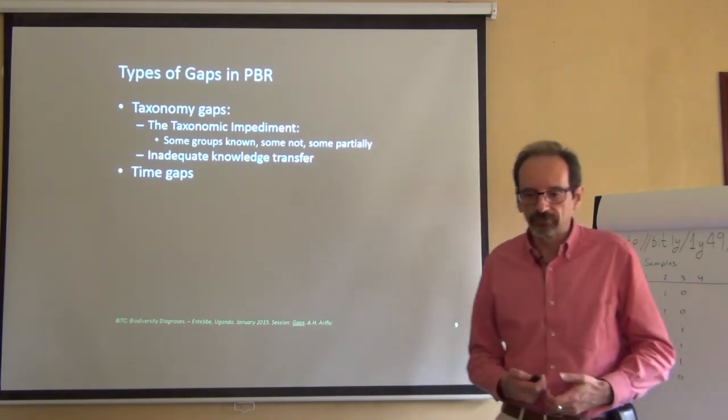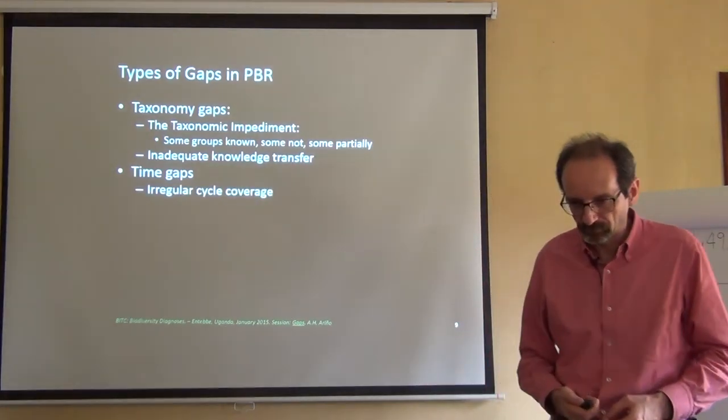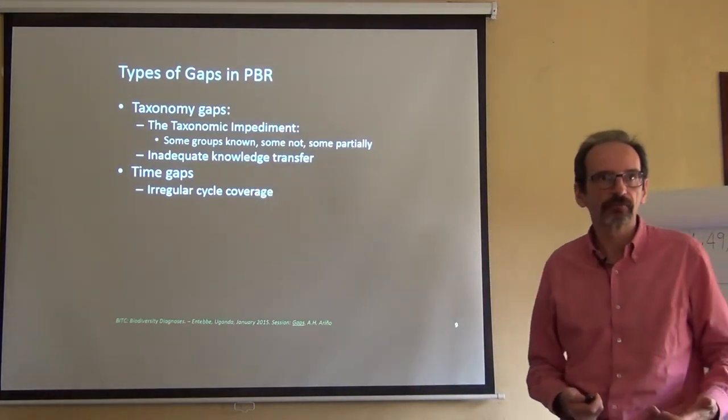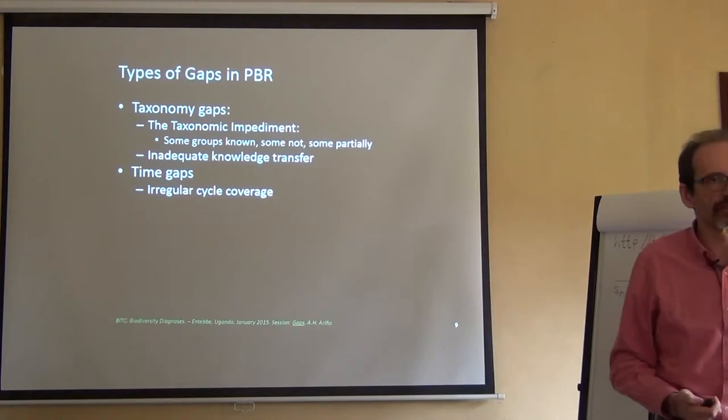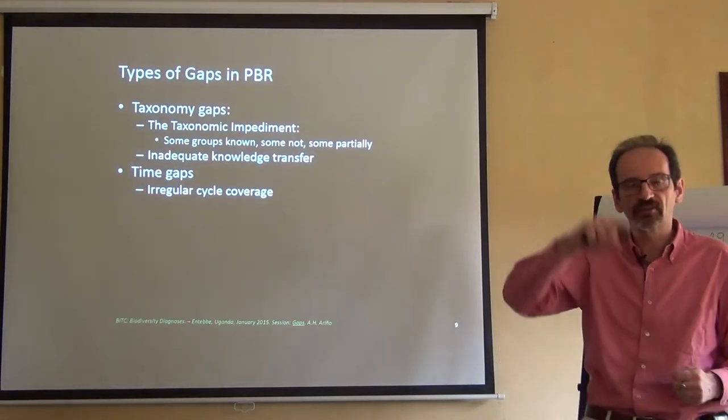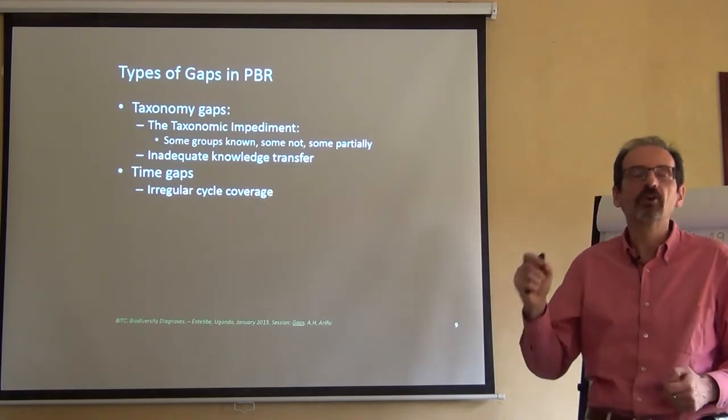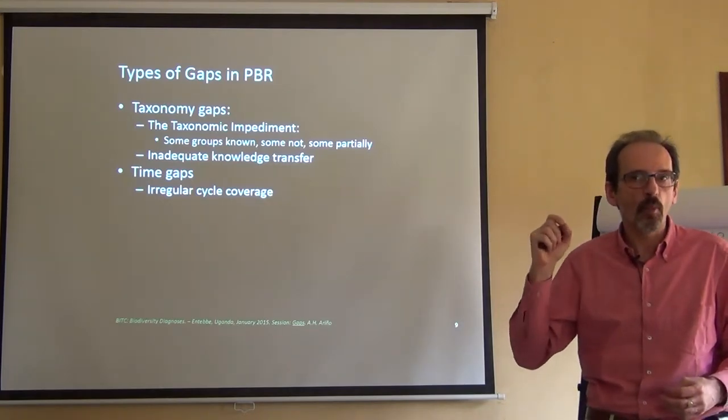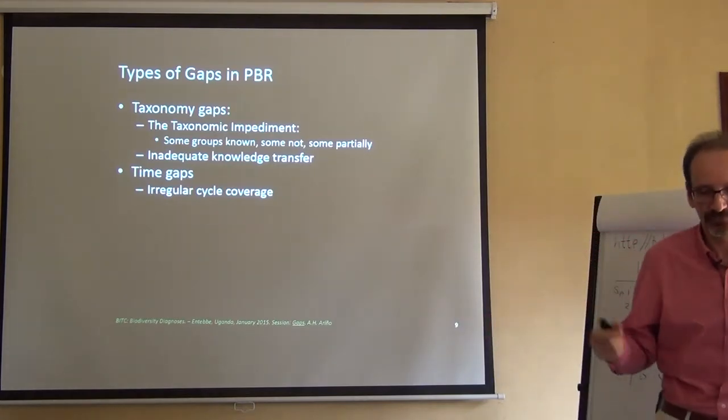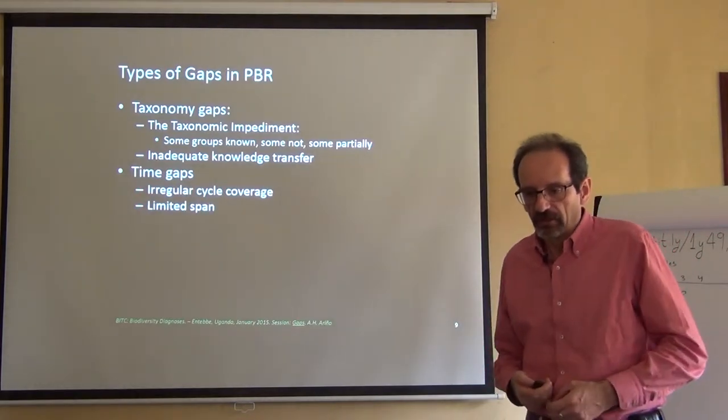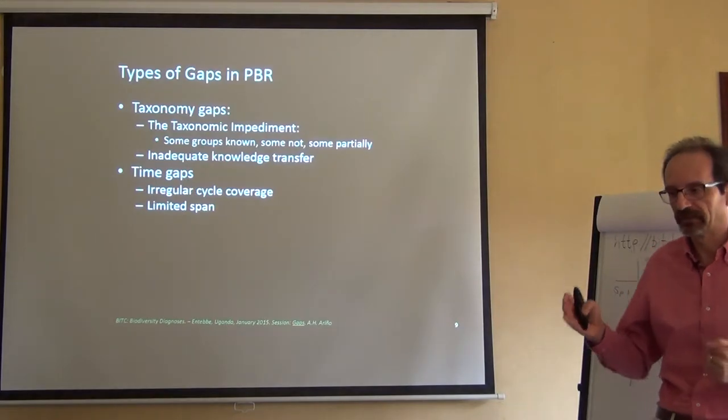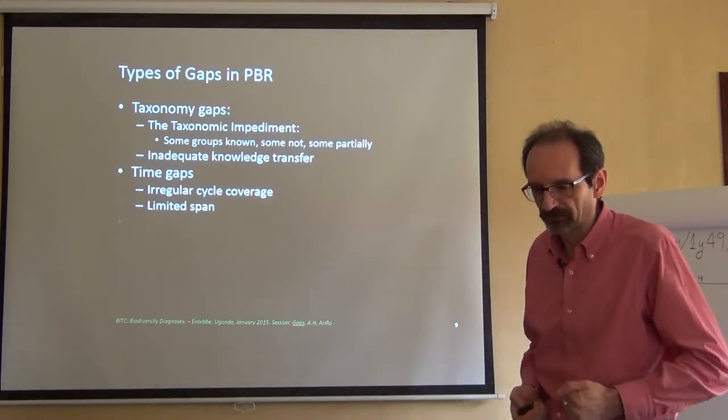The second type of gaps are time gaps. Which might mean that the cycle, the natural cycles, are not covered. For instance, if we want to know something about a certain species, or a number of species, that have a natural cycle, that appear in summer, disappear in winter, and we don't have, we only have winter data, we basically will know nothing about the species. There's also the limited span that Townes explained before. We might only have data from a certain period of time.